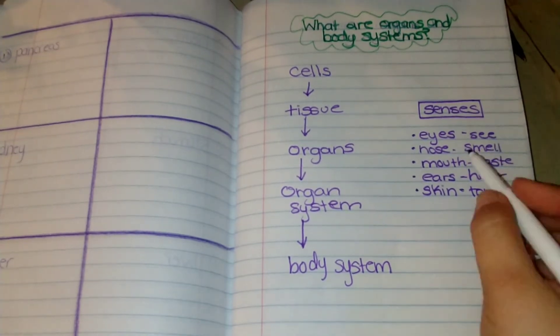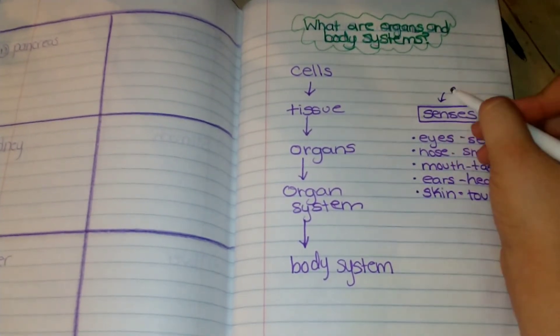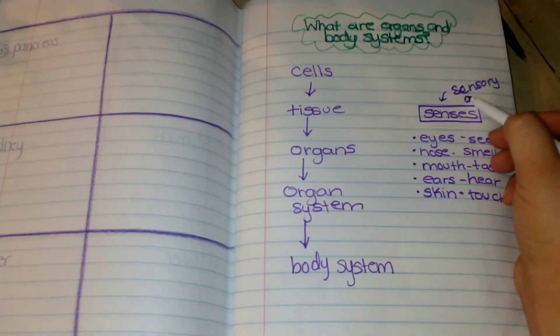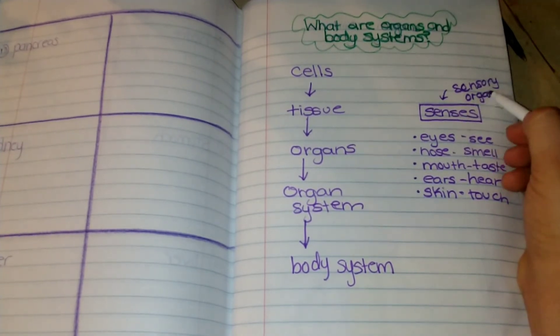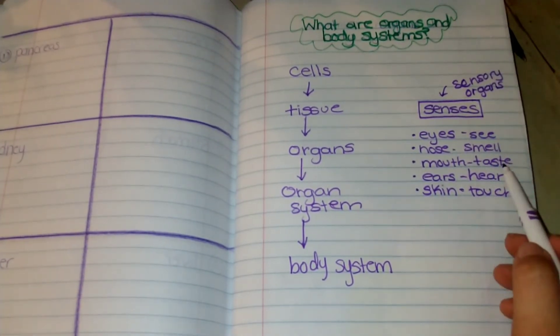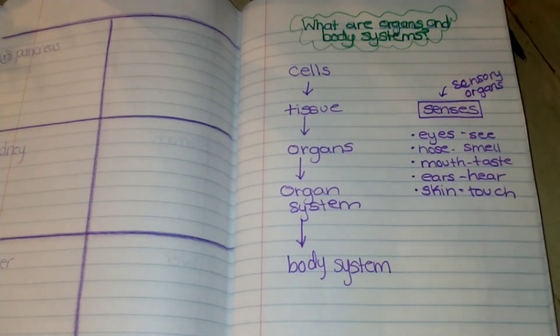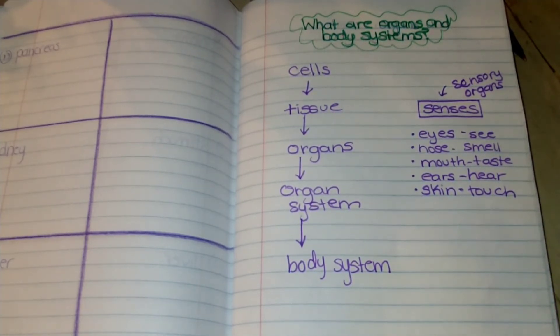These are called sensory organs. They take all of the information coming in through sight, smell, taste, hearing, and touching, and they send it all the way to your brain to understand what is coming in. They all work together as a system, the nervous system, which we'll talk about a little bit later.